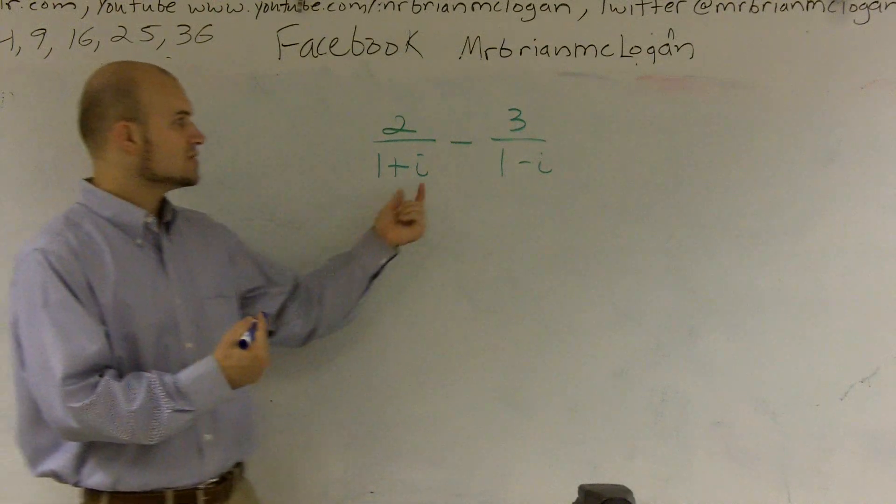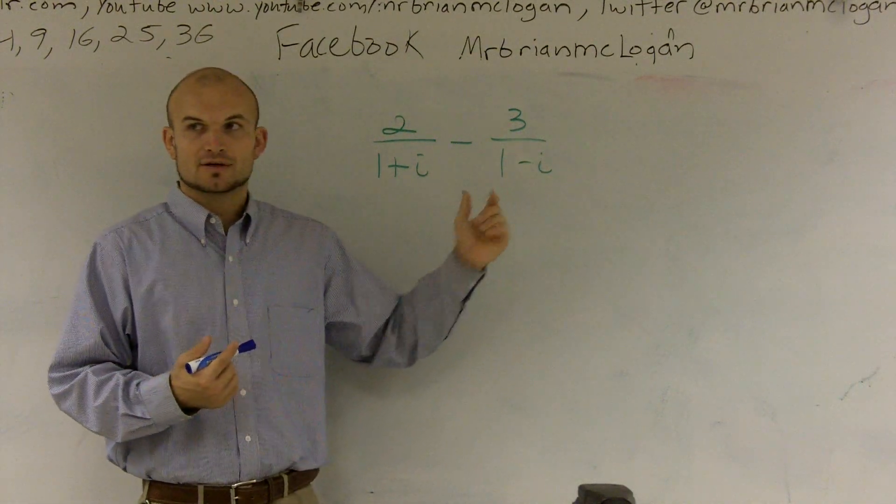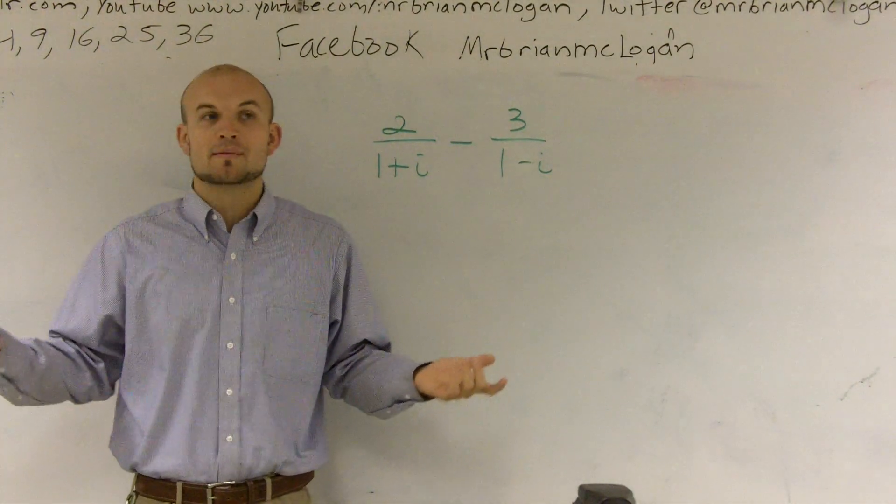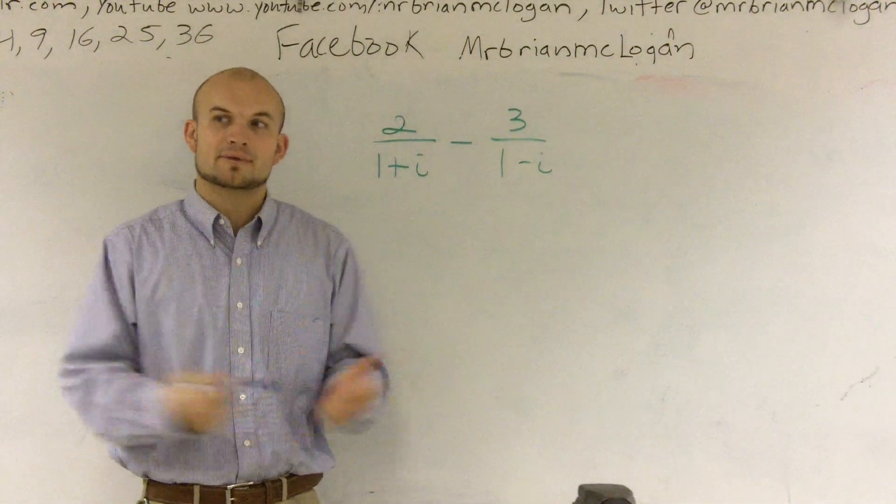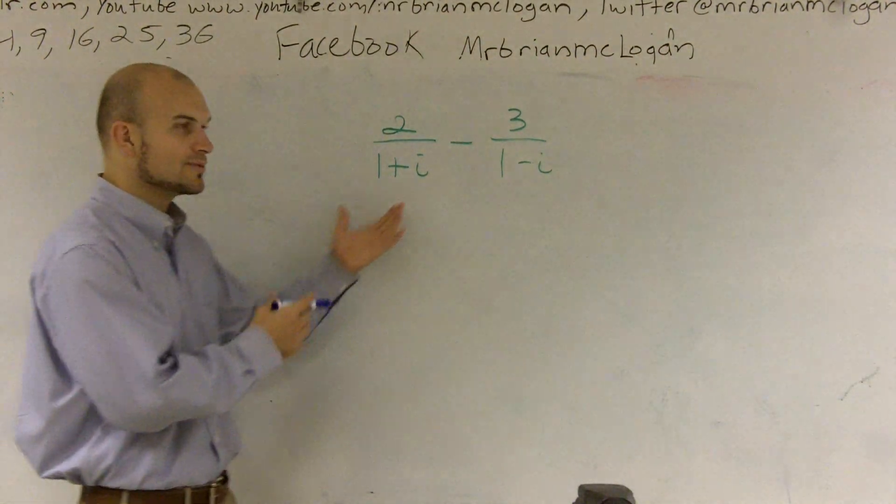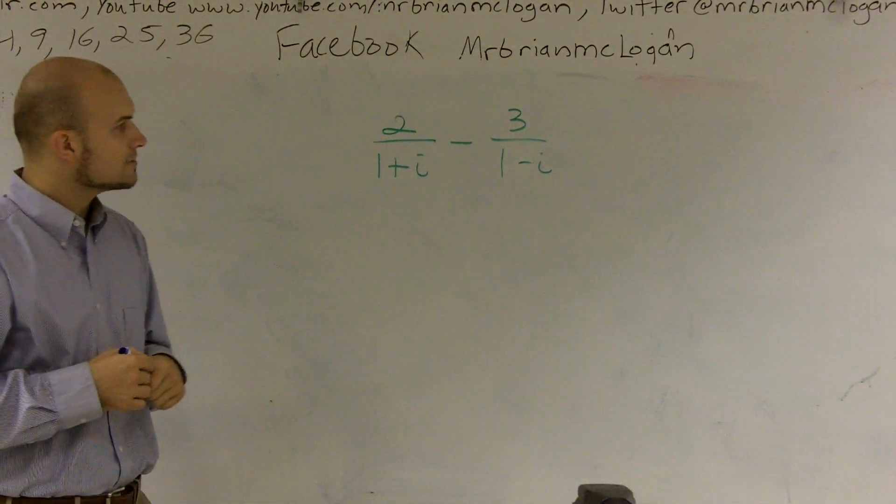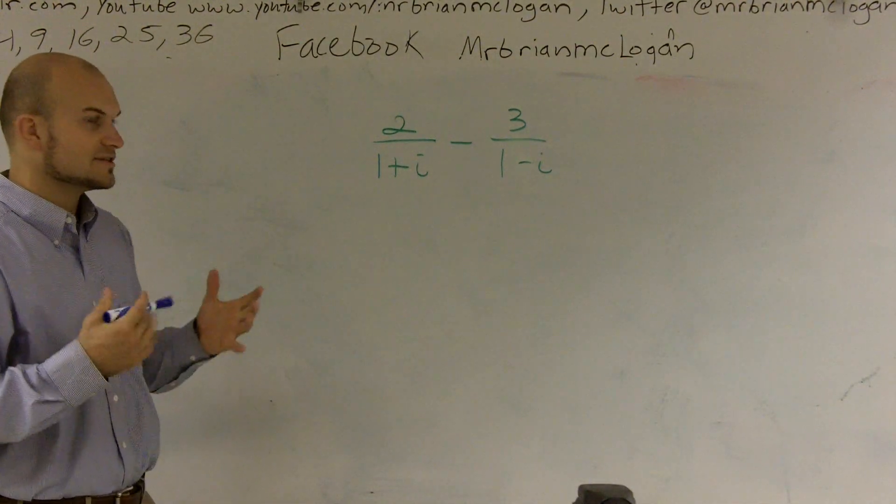And one little trick that we always like to do to always get the common denominator is you can multiply the denominators by each other and that will give you a common denominator. It might not be the least common denominator, but it'll always work. And that's something you guys did with regular fractions when you had different denominators.